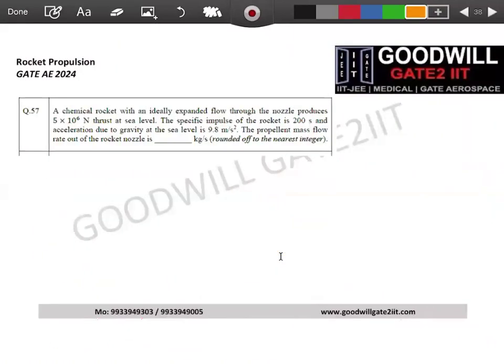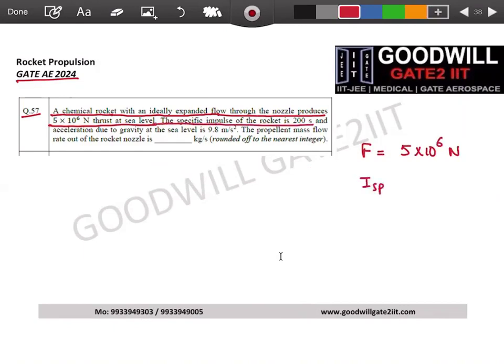Last numerical, 2024 question number 57. A chemical rocket with an ideally expanded flow through the nozzle produces this much amount of thrust at sea level. So thrust produced by this nozzle is 5 into 10 to the power 6 newton at sea level. The specific impulse of rocket is 200 seconds, so they have given me Isp 200 seconds, and gravity is 9.8 meter per second square.